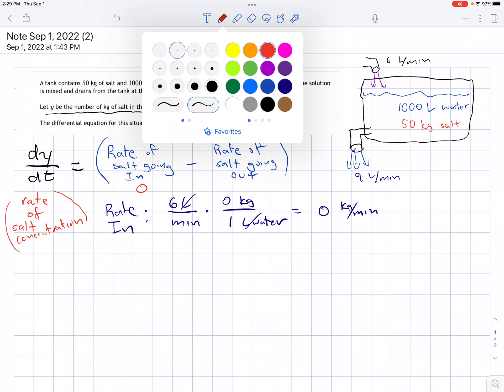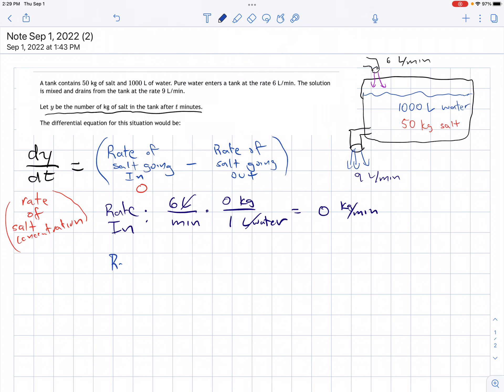The part we're really interested in is the rate out. We know the mixture is leaving the tank at 9 liters per minute, and the salt coming out with that is y kilograms per volume, where the volume is in liters.